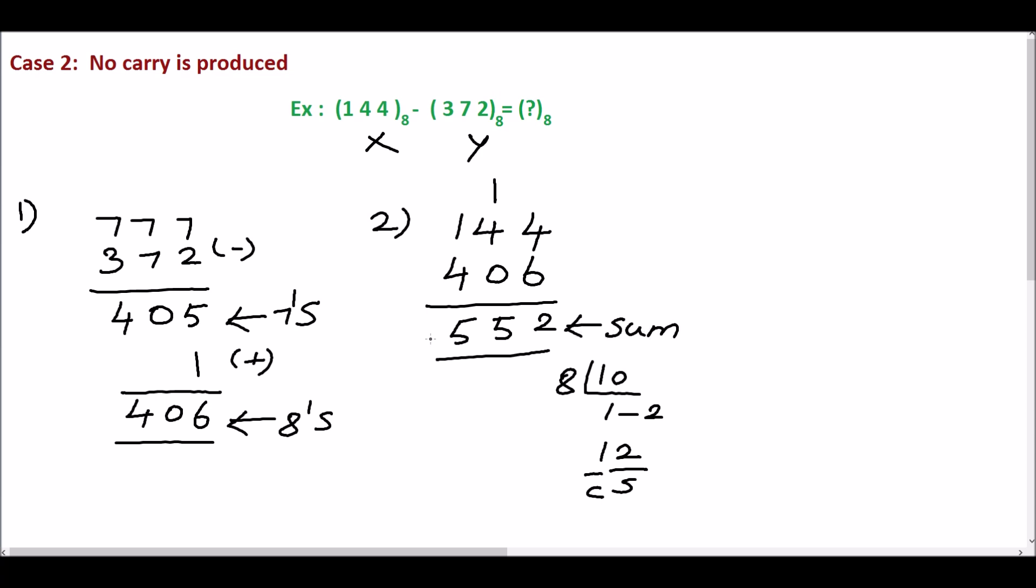In step 2, there is no carry. So take the 8th complement for the sum. First, find 7th complement. The sum is 5, 5, 2.